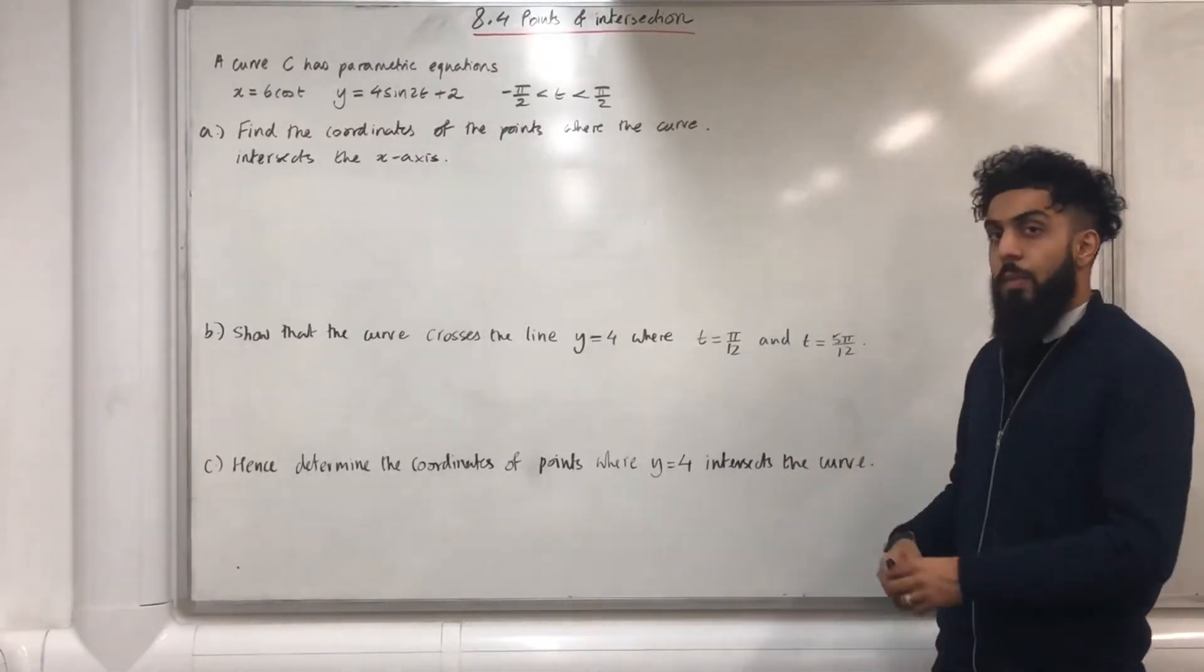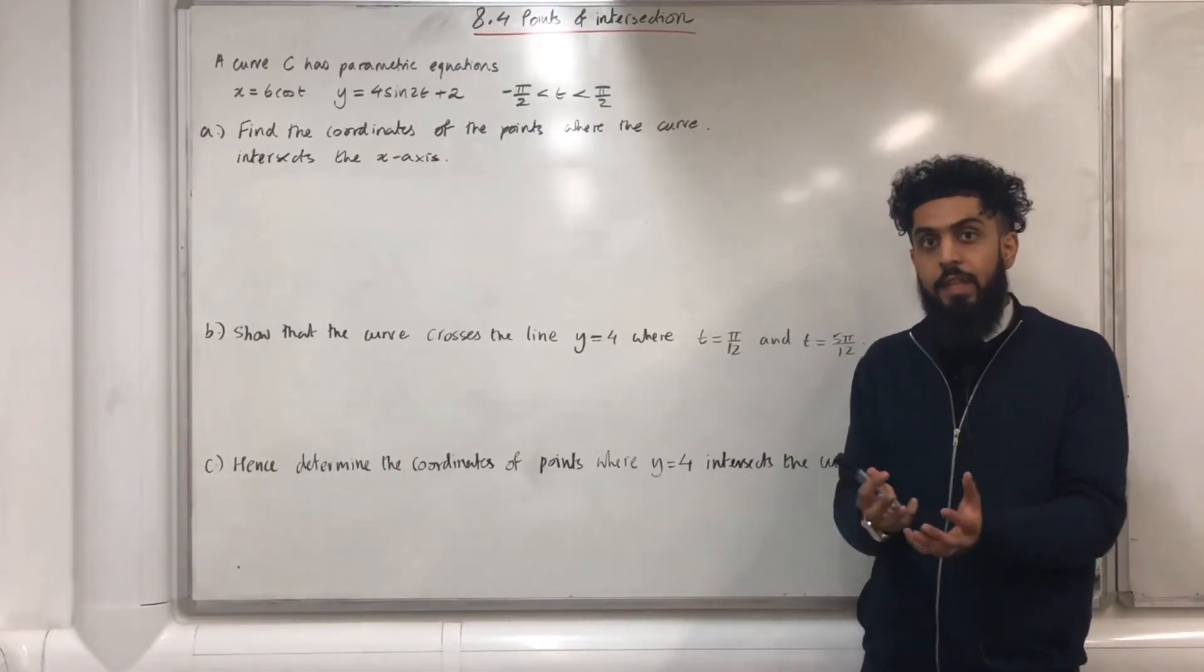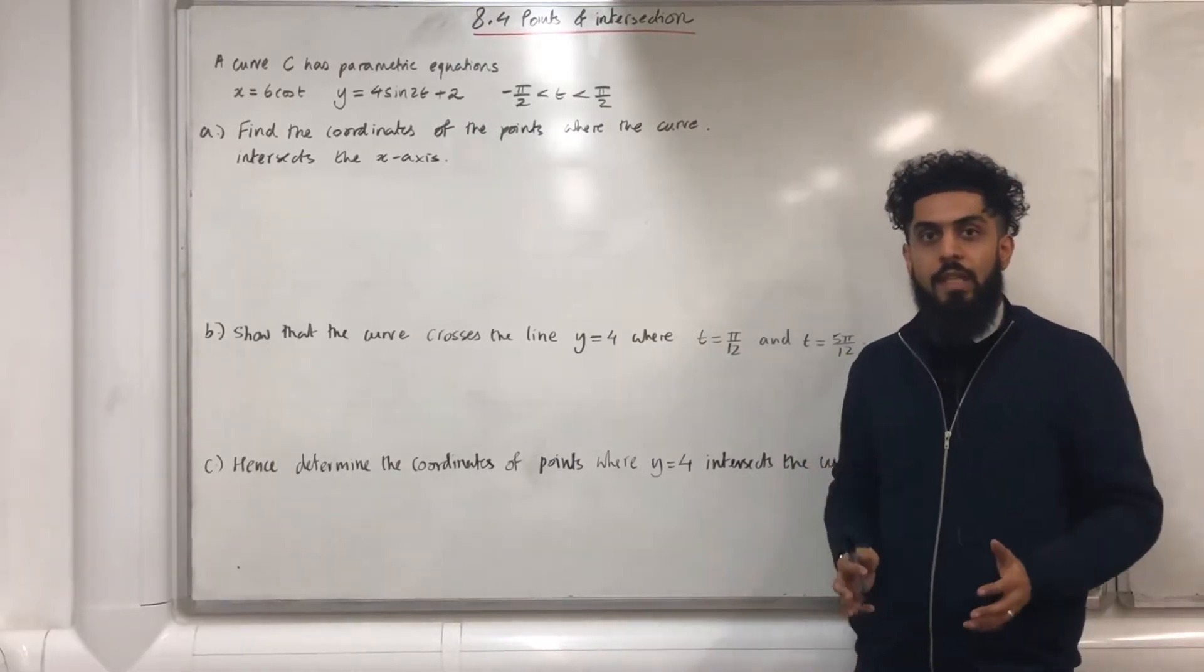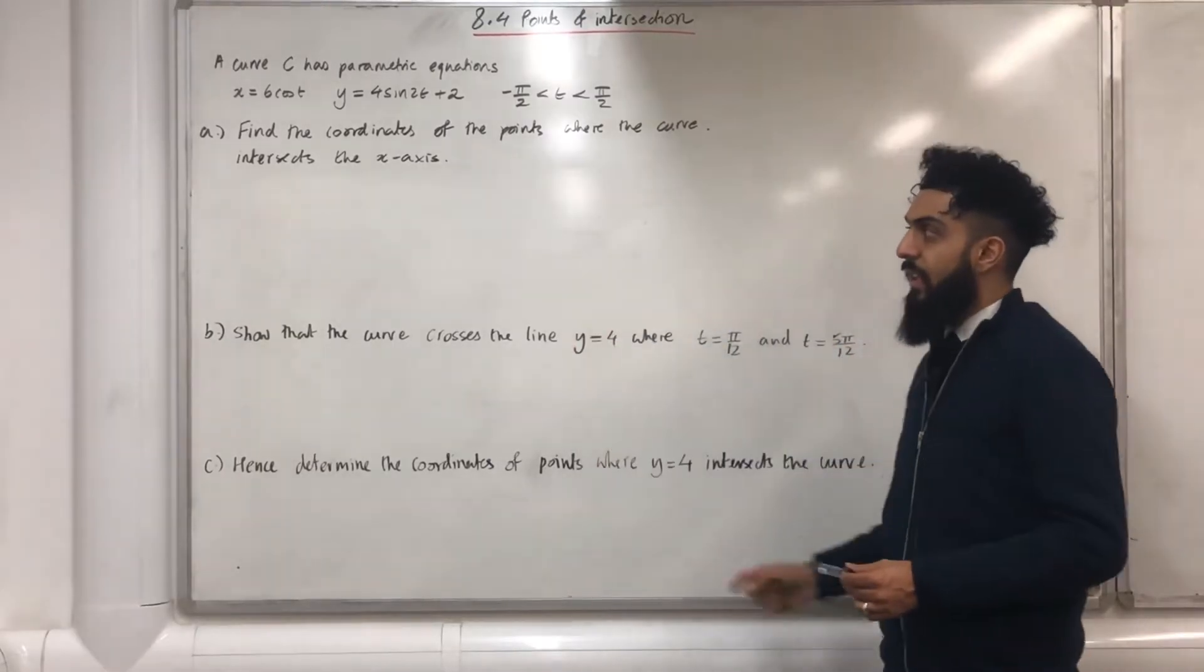8.4 represents Chapter 8, Section 4 of the Pearson A-Level Maths Pure Maths Tier 2 textbook. In this particular section, I'll be explaining how to work out a point of intersection on a given curve C when the equation of the curve C is given in parametric form.